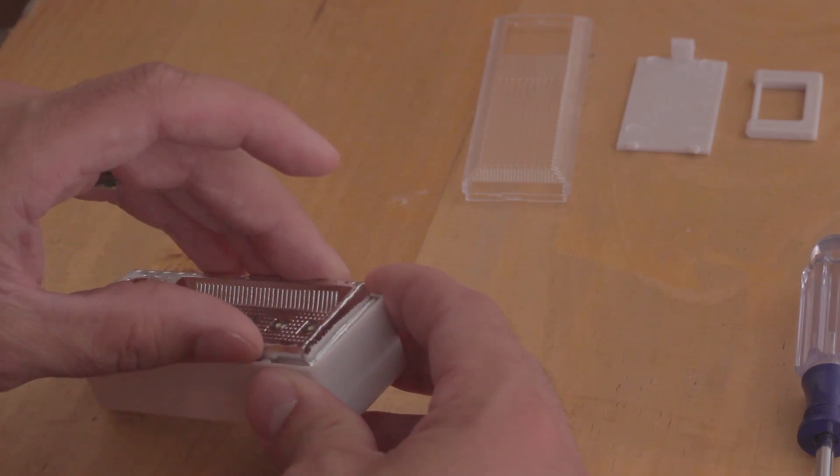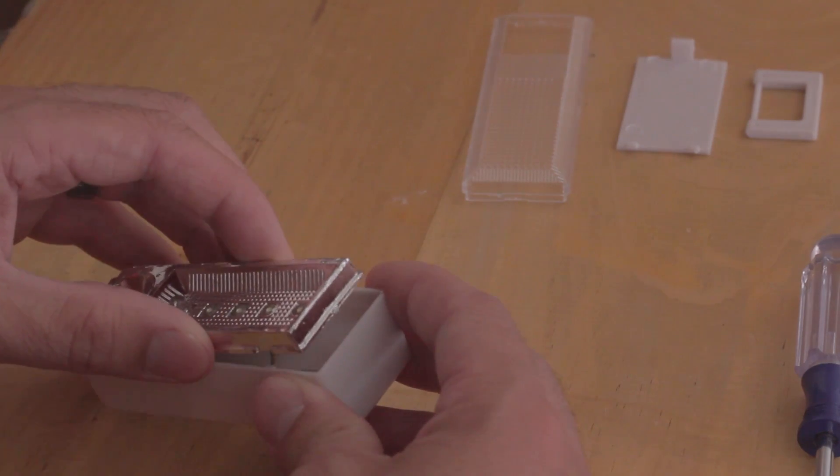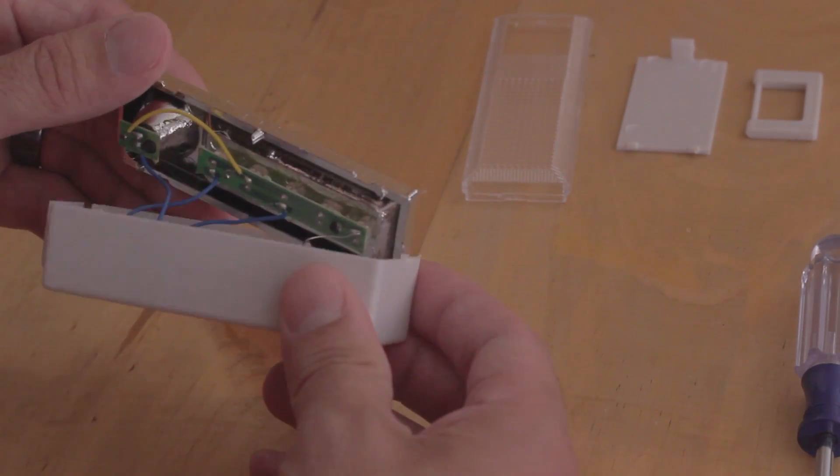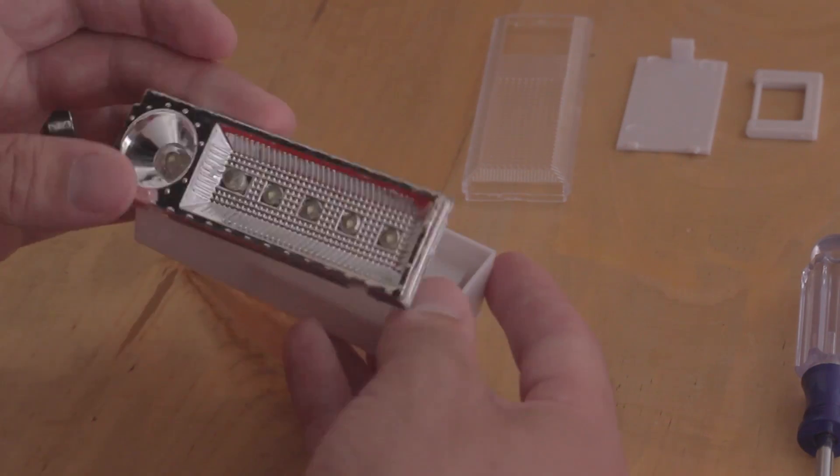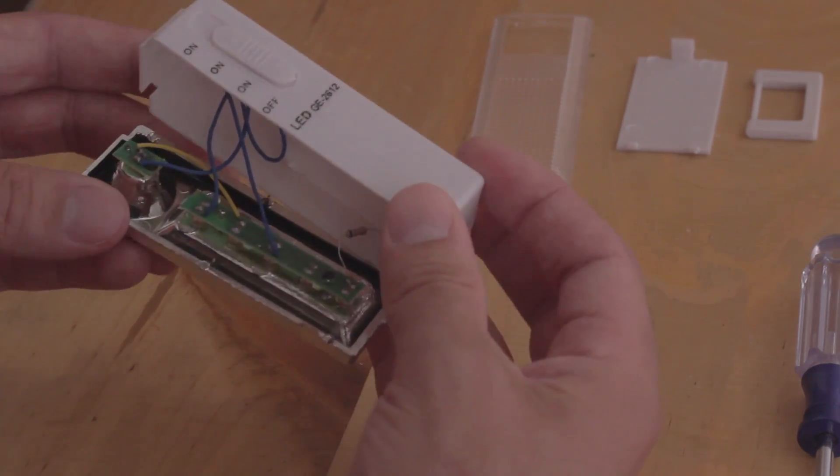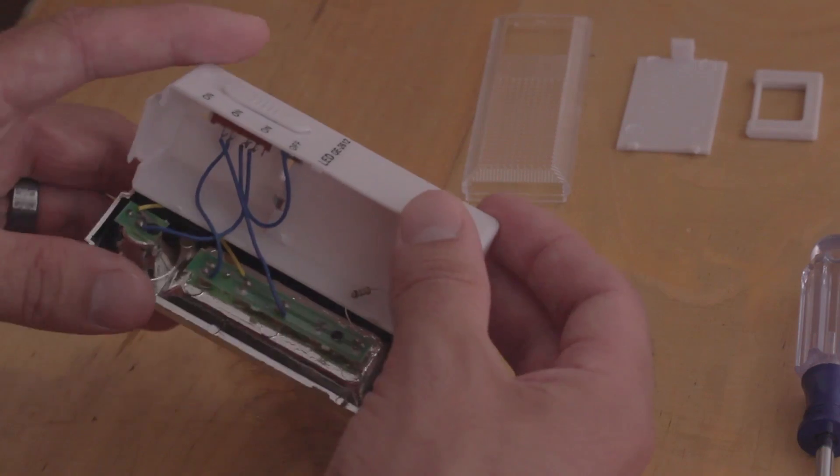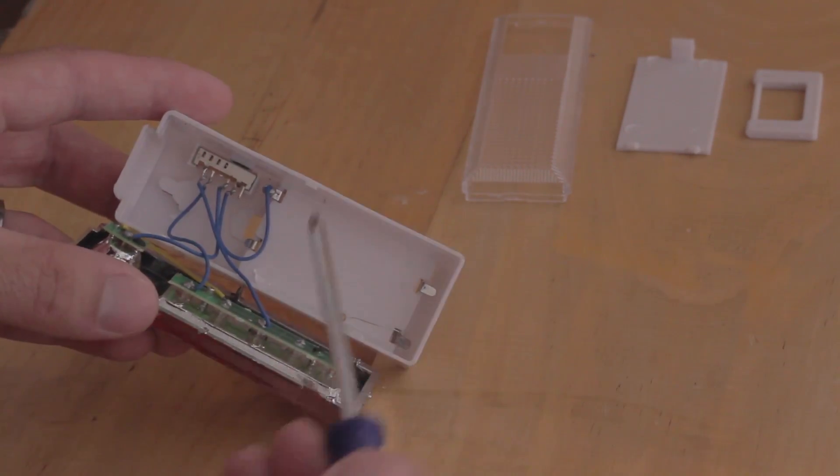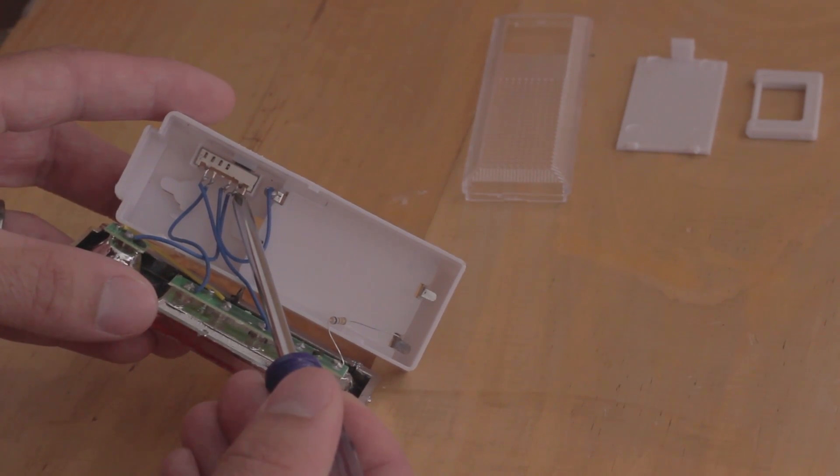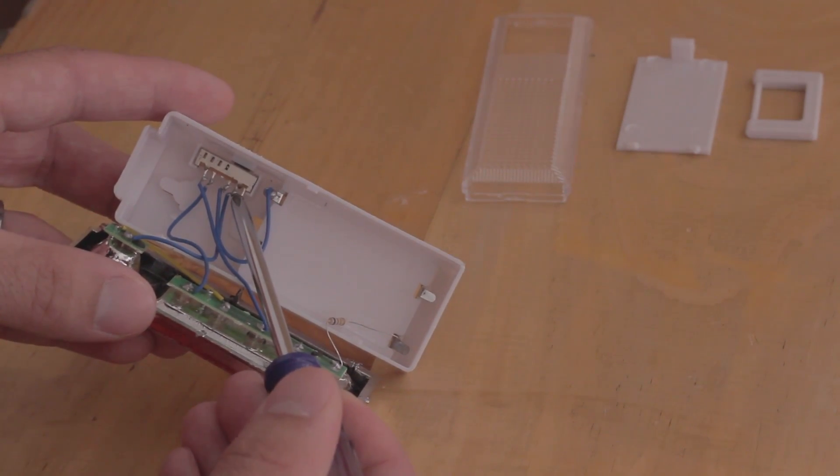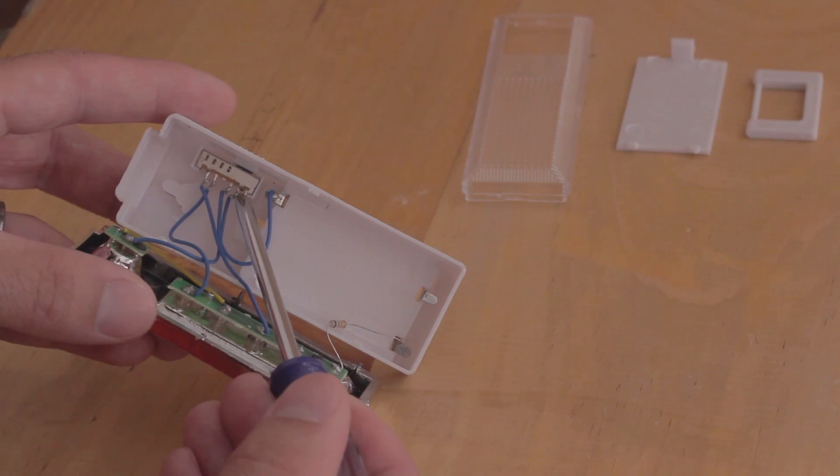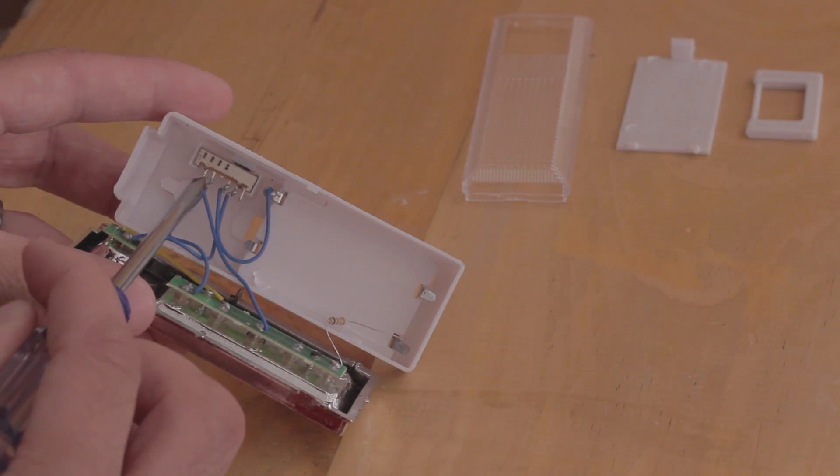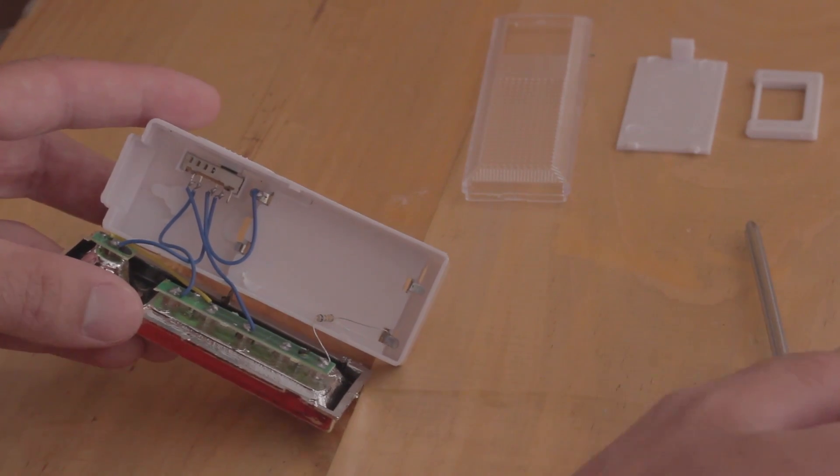So you're going to need a soldering iron and that is it. You shouldn't even need any solder, you should just need a soldering iron. So we're going to open it up and on the inside, essentially all we're doing is taking this wire right here that leads up to the first switch at the bottom, this little solder point here. We're going to move this wire to the last point and here we go.